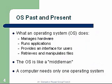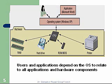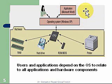OS past and present — what an operating system does. It manages the hardware, runs applications, and provides an interface for the users. Users use the OS to manipulate or work the hardware and to retrieve and manipulate files. The OS is like a middleman — it resides between the user and the hardware, takes instructions from the user, and then implements those instructions on the hardware. The computer needs only one operating system. Here's a diagram showing a user operating an application like Microsoft Word, with the operating system driving all the hardware.